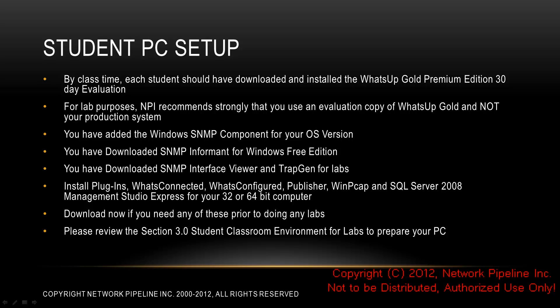You'll want to consider setting up a PC for labs. We recommend you download and install a What's Up Gold Premium Edition 30-day evaluation along with all the plugins. For lab purposes, we strongly recommend using the evaluation copy of What's Up Gold and not your production system, as we'll be asking you to make changes that could affect production. You'll also need to add the Windows SNMP component for your OS version. There's also SNMP Informant for Windows Free Edition, the SNMP Interface Viewer, and TrapGen — these tools will be used for labs, and we'll indicate where to download them in the appropriate video.